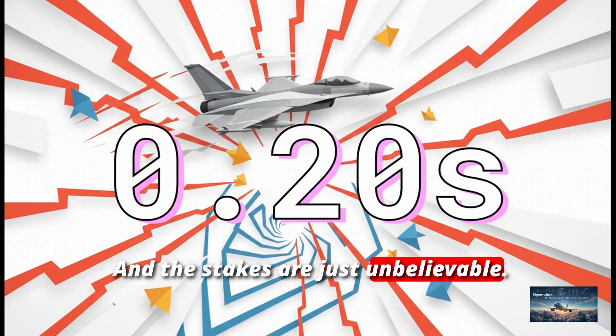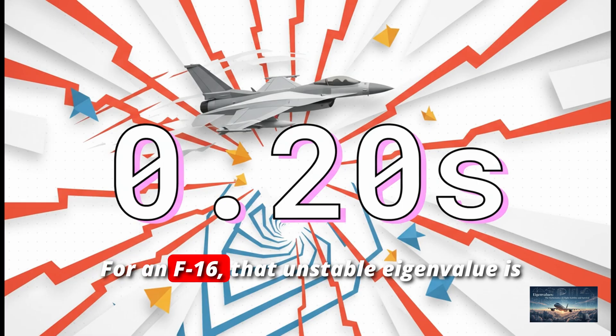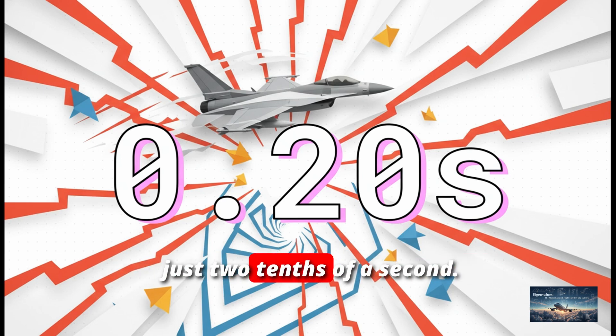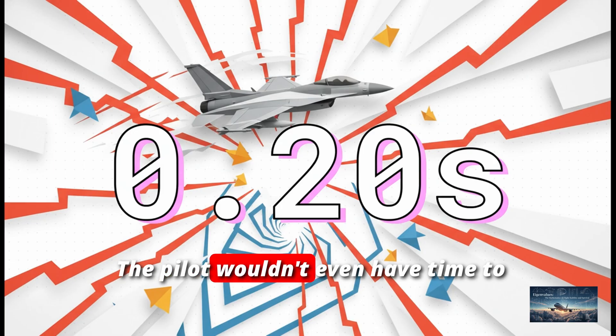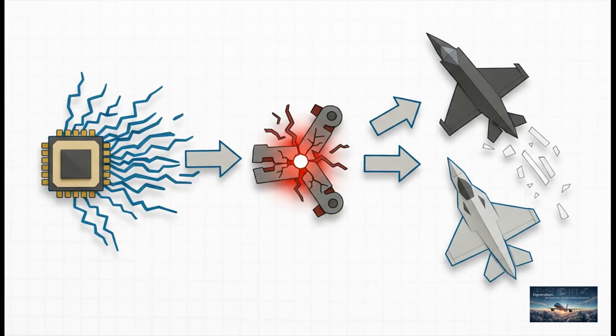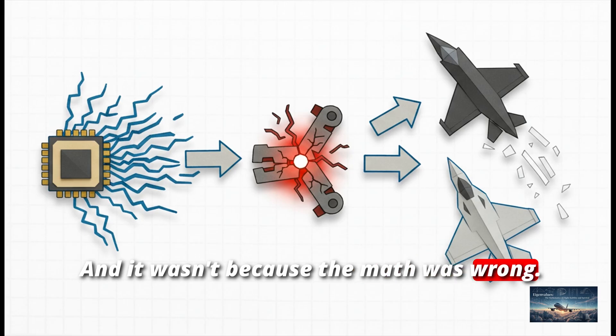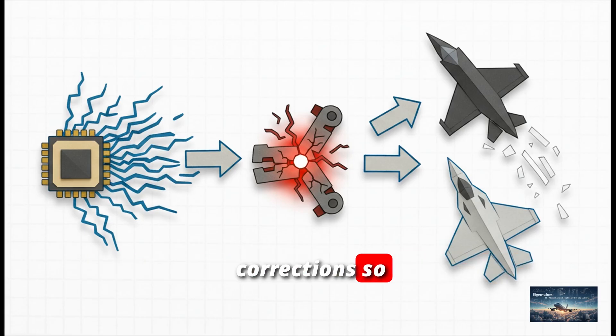And the stakes are just unbelievable. For an F-16, that unstable eigenvalue is so powerful that if its computers failed, any tiny flight error would double in size in just two-tenths of a second. That's literally faster than you can blink. The pilot wouldn't even have time to react before the plane was out of control. And this is not just a what-if scenario. There were famous crashes during the testing of jets like the YF-22 and the Swedish Gripen. And it wasn't because the math was wrong. It was because the computer was demanding corrections so incredibly fast that the physical parts, the hydraulics and control surfaces, couldn't keep up.